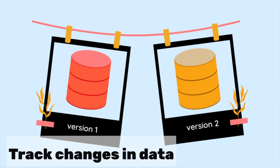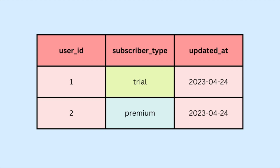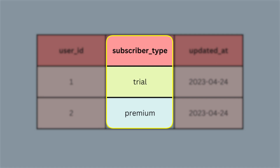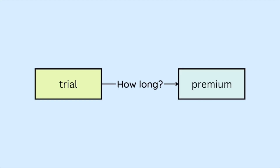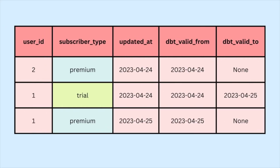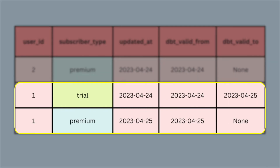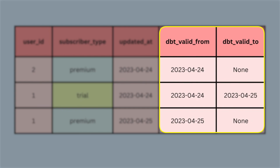With dbt, you can track changes over time with snapshots. To see why this is useful, imagine you have a subscriber type table where the subscriber type field is frequently overwritten as subscribers modify their membership status. If a user changes their membership from trial to premium, the record of when the user had the trial membership will be lost. Losing this record can be problematic if we want to use it for other evaluations, such as calculating the average time taken by a user to change their subscription. dbt snapshots these changes to help you understand how values in a row change over time. You can see that the new records do not override the old ones. Furthermore, dbt keeps track of the validity period for each record.